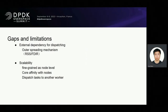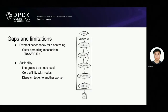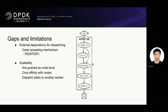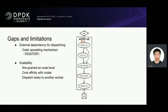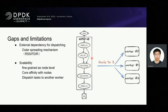Currently, the graphs are designed to work on single core to have better performance. Let's take Layer 3 forward as an example. It's a deployed Layer 3 forward in Worker 0. With the increasing number of streams, one worker core cannot handle all business traffic. So, if we want to scale to three workers, how to do?